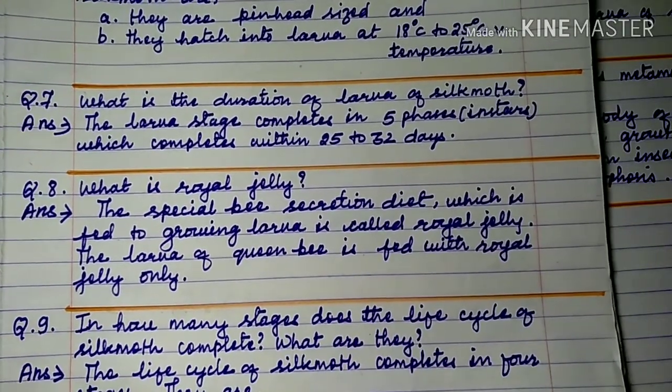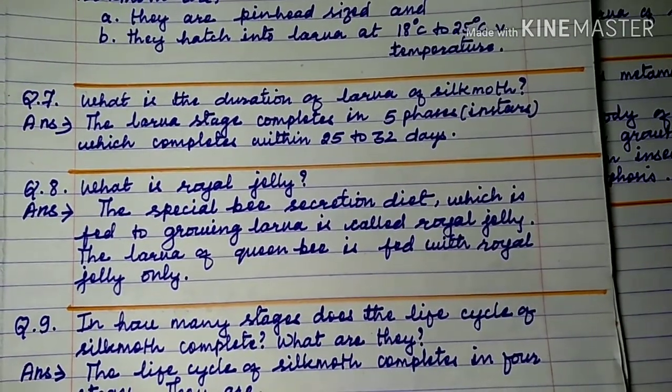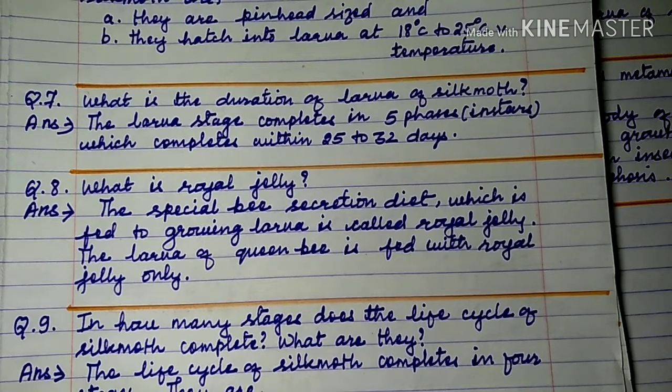Question number 8: What is royal jelly? The special bee secretion diet which is fed to growing larvae is called royal jelly.